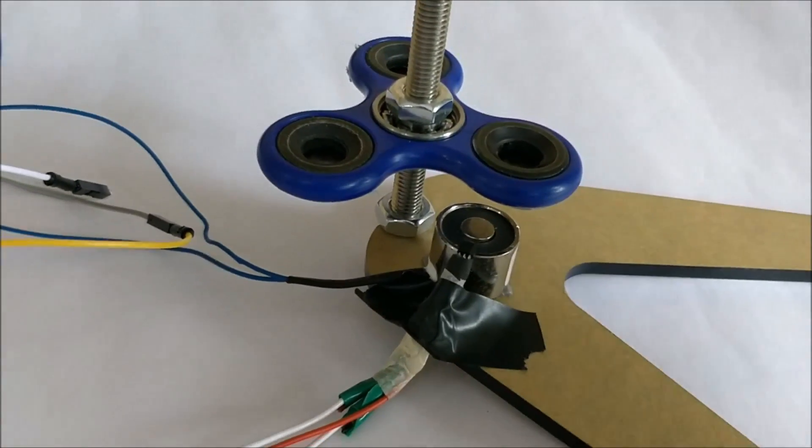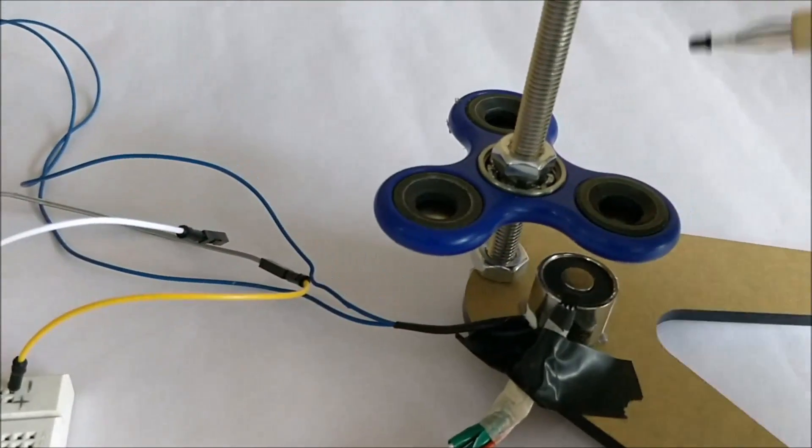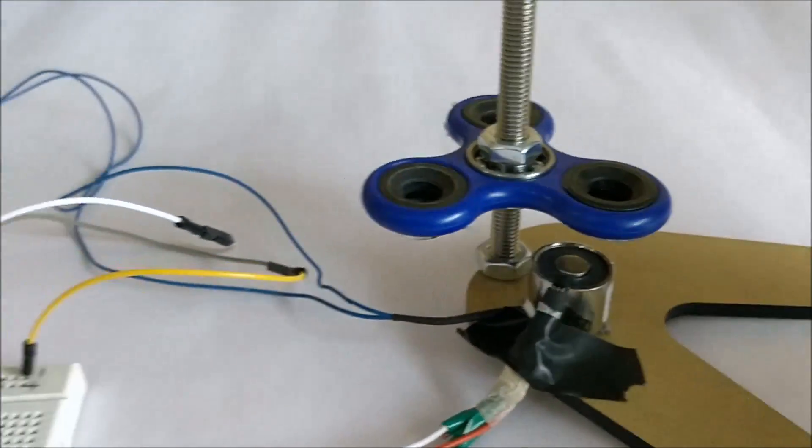So let me go ahead and show you the working of the project, and then we'll proceed to the circuitry. I'll also unmount the fidget spinner from this arrangement and show you how the magnets are stuck underneath and everything.